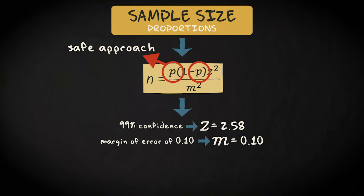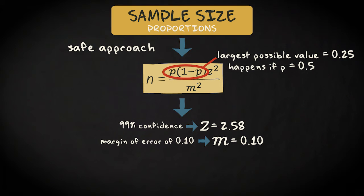In the formula you can see that the sample size depends on the value of p multiplied with 1 minus p. The largest possible value this multiplication could take is 0.25, and that only happens if p, and therefore also 1 minus p, equals 0.5. Just try it.